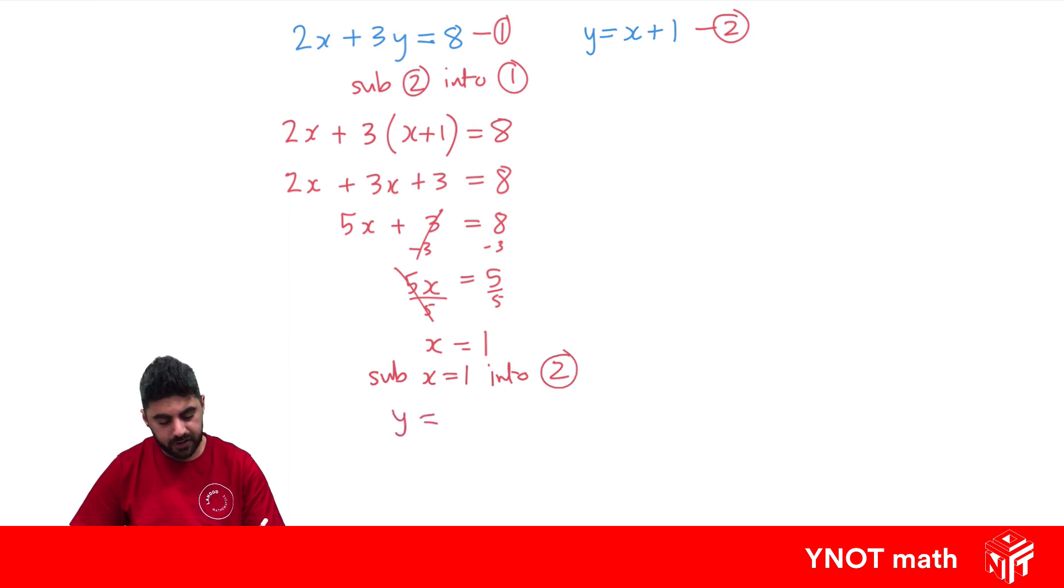So we get y equals x. Well we know x is now 1. So we get 1 plus 1 and y is going to be 2. And then just a conclusion statement saying therefore x equals 1 and y equals 2. And graphically that represents the point where if we graph these two straight lines out, they would intersect at the point 1, 2.